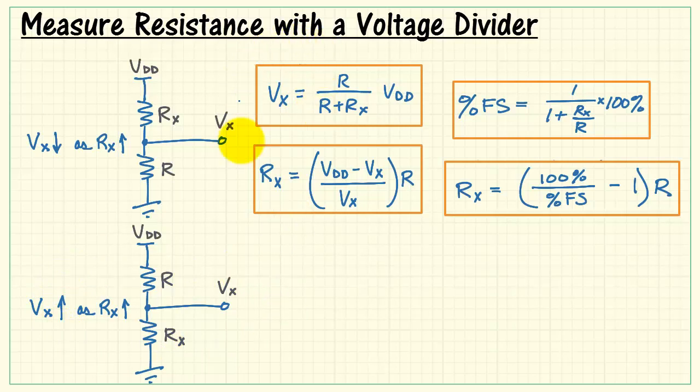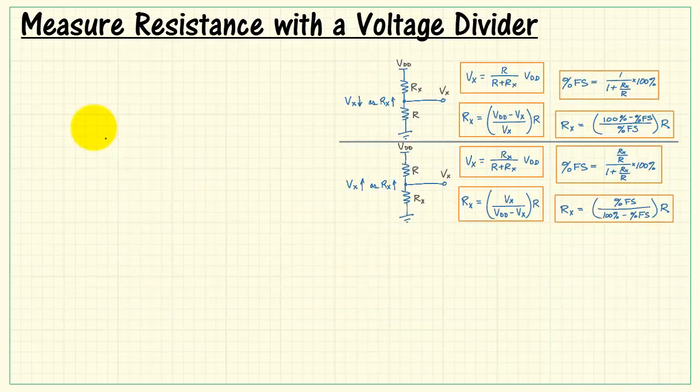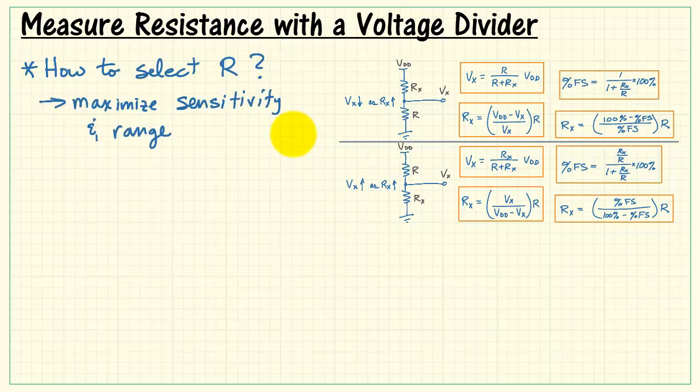We can essentially take these set of equations, interchange the positions of R and Rx, and we get equations that are pretty similar, except for some minor differences. Just point out some of those. This looks like the reciprocal of that one, which suggests that this term must be the reciprocal of that term right here. Let me use the common denominator of percent full-scale. I think it becomes more clear then that this is the reciprocal of this term. Those are all the basic equations you need to recover resistance from the measured value of Vx.